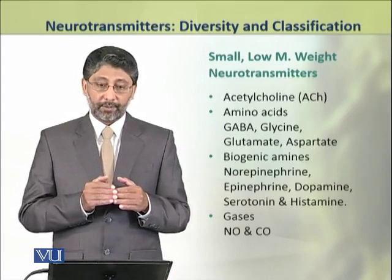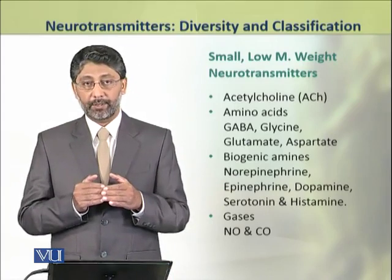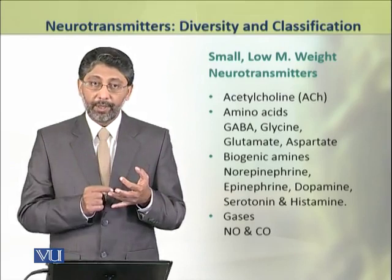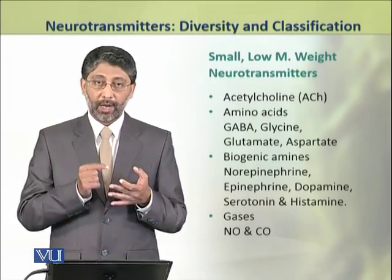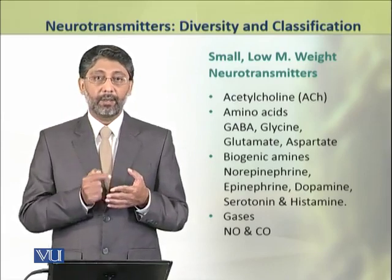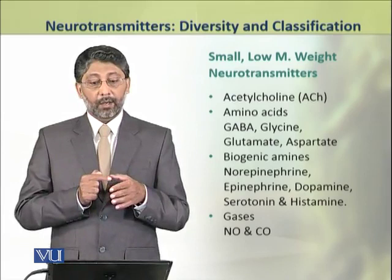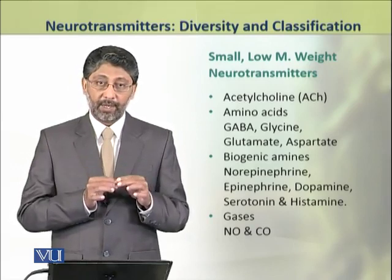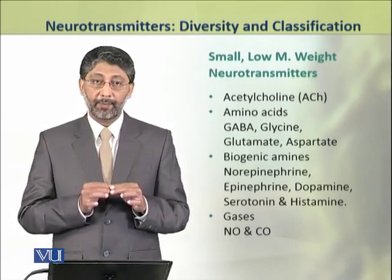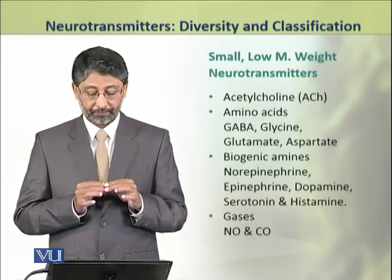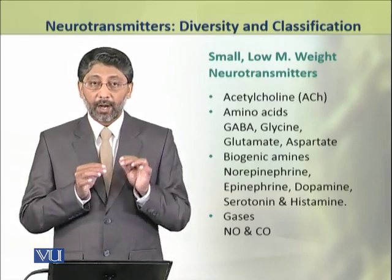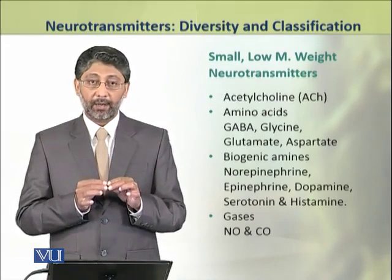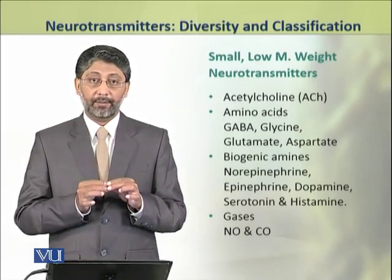First, we shall discuss the small, low molecular weight neurotransmitters. They include acetylcholine, some amino acid neurotransmitters — for example, GABA, glycine, glutamate, and aspartate. They also include biogenic amines that include norepinephrine, epinephrine, dopamine, serotonin, and histamine. Some gases are also small, low molecular weight neurotransmitters. These are carbon monoxide and nitric oxide.